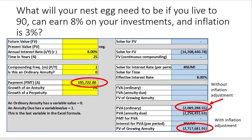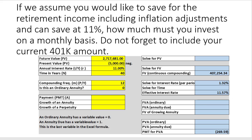Sounds like an awful lot of money — and obviously it is — but how can we get that amount? If we assume I'd like to save for retirement including inflation adjustments, and I can save at 11%, how much do I need to invest on a monthly basis? Don't forget I also have a current amount in my 401k. In the future I need $2.7 million, I have $5,000 today, the annual interest rate is 11%, I have 40 years, and compounding frequency is 12. So to get $2.7 million, I need $269 a month.